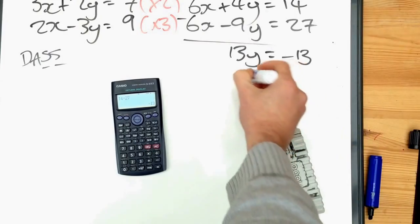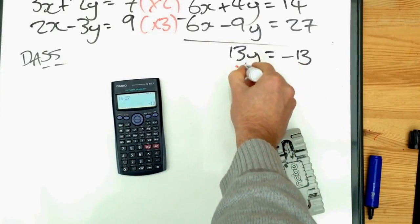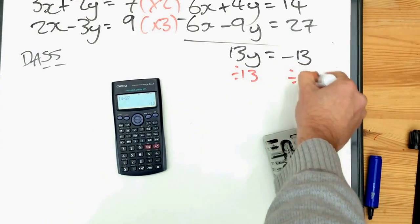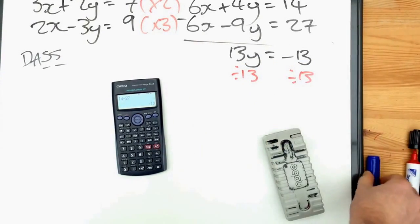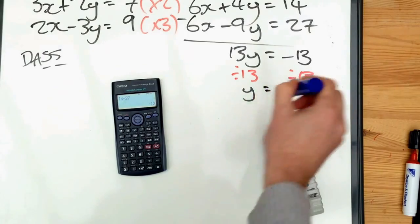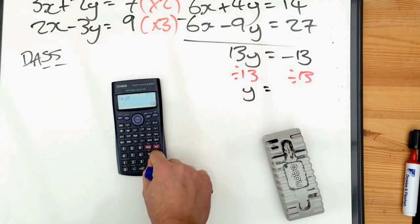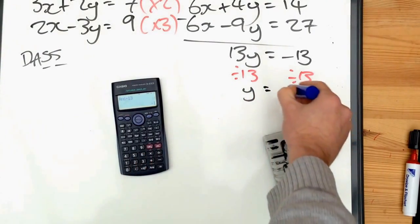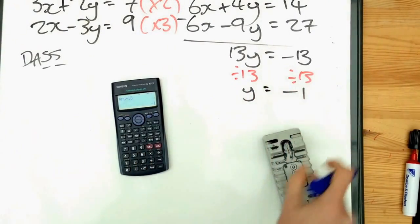The next thing to do is divide both sides by thirteen to end up with one y. Again, if you're not 100% certain what you're doing, use the calculator. And we end up with y is minus one.